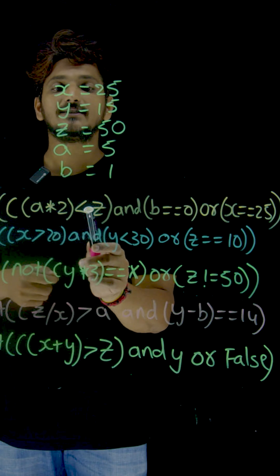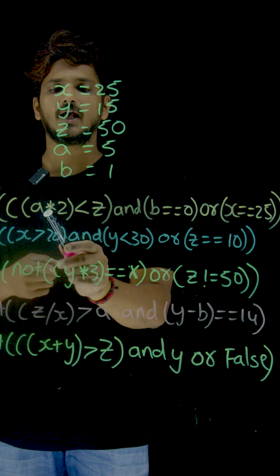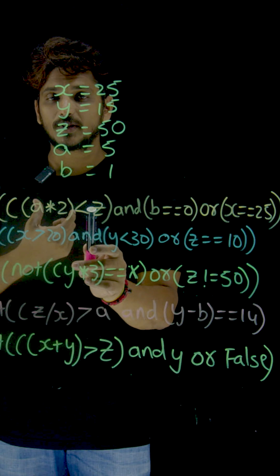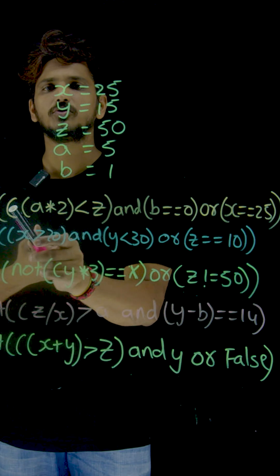10 less than z. Yes. Z is 50. 10 less than 50, yes. Whenever this comparison operator has been done, 10 less than 50, it is true. So the output that you got here is true.